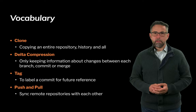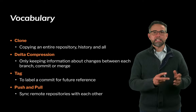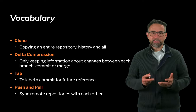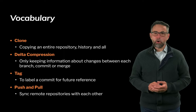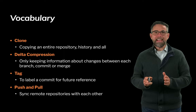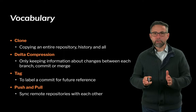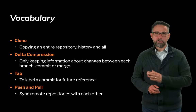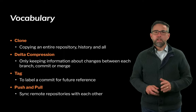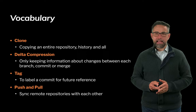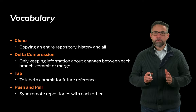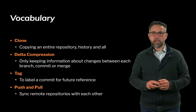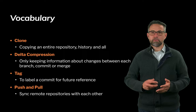A few more vocabulary terms: clone means to make a copy of an entire repository — history, files, and everything. Delta compression is a key benefit of software change management systems — it only keeps information about changes between one commit and another, not a whole new copy of all files. This is why software change management is feasible. Tag means giving a particular commit a name, such as a semantic version number. Push and pull refer to synchronizing two different repositories, merging their histories to create a consistent view.